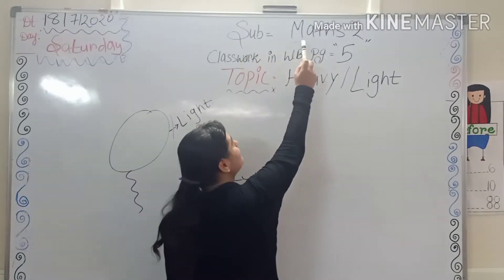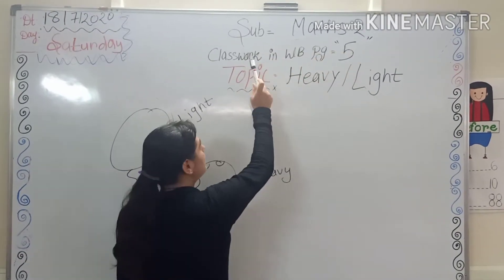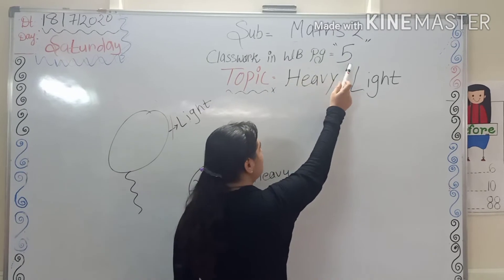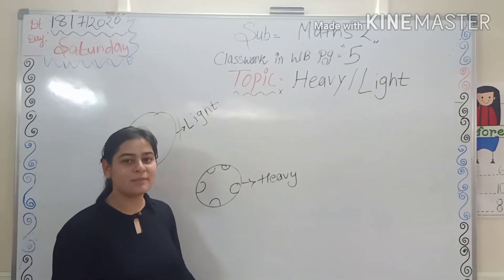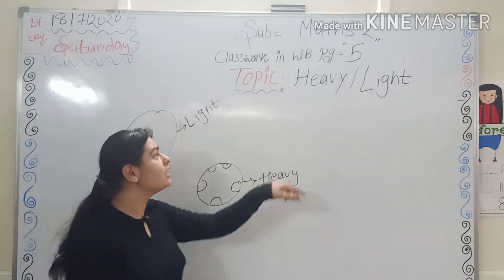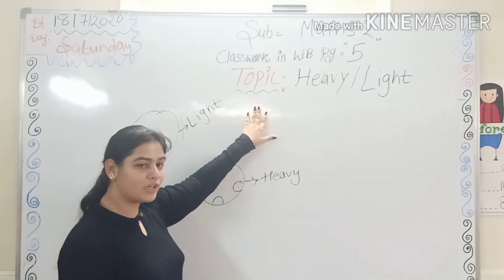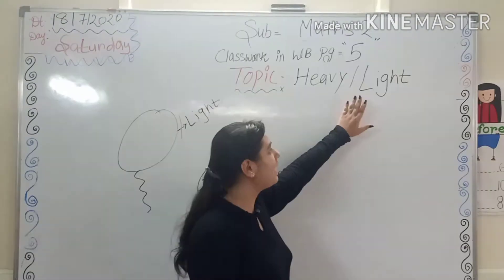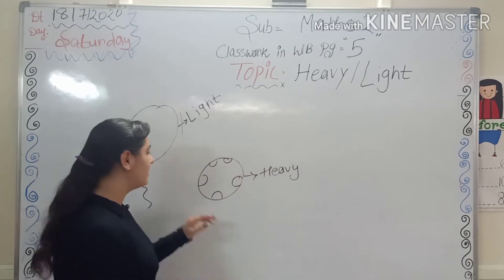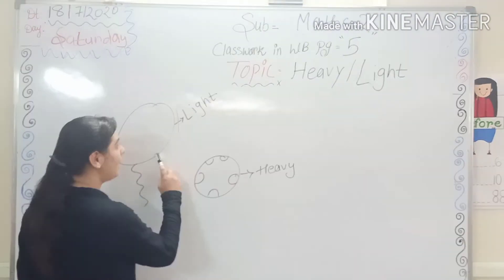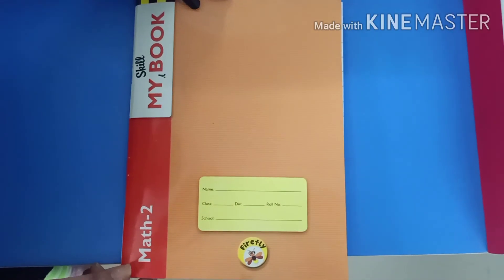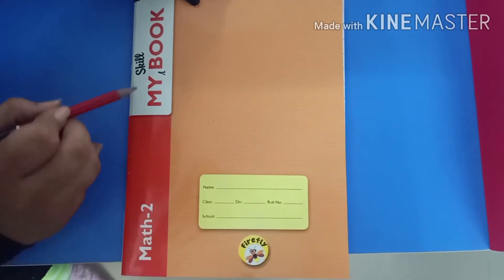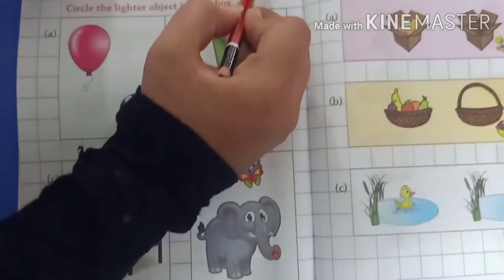And our subject is Maths 2. Classwork in workbook, page number 5. Our topic is Heavy and Light. Now kids, take this book, Maths 2, and open page number 5.